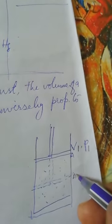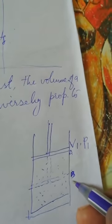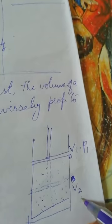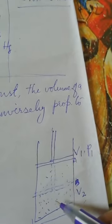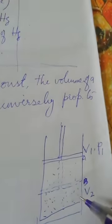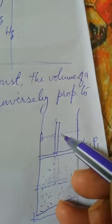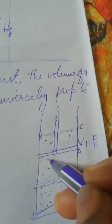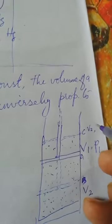Moving the piston from position A to position B compressed the gas molecules, causing the volume to decrease to V2. Because the same number of gas molecules were compressed into a smaller space, the chances of bombardment on the walls increased, so the pressure increased. Then the piston was pulled outward to position C, causing the volume to increase. He found that when the volume increased, the pressure of the gas decreased — meaning volume and pressure are inversely related to each other.